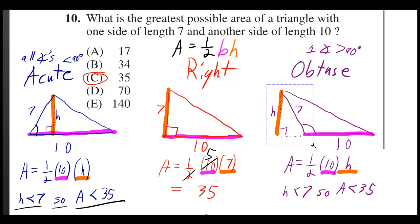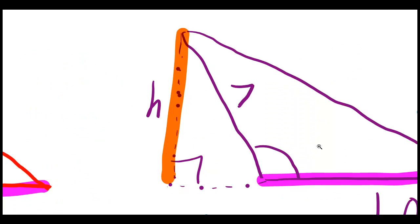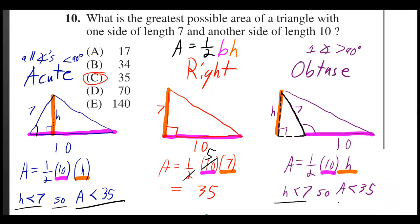We're going to have the same problem if we focus on this right triangle, too. Again, the 7 is the hypotenuse, and the height is only a leg. So, the height is going to be less than that, which again means that the area is going to be less than 35.